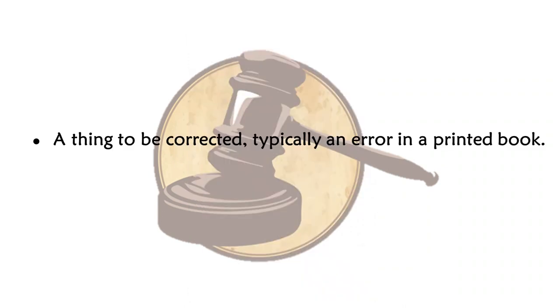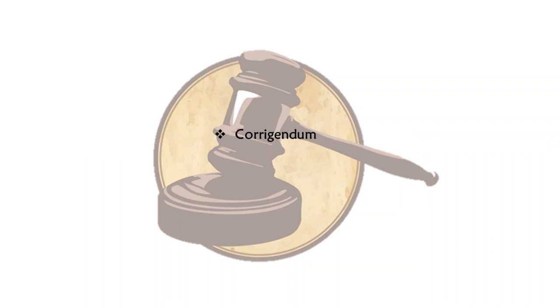A thing to be corrected — typically an error in a book — would be called a corrigendum.